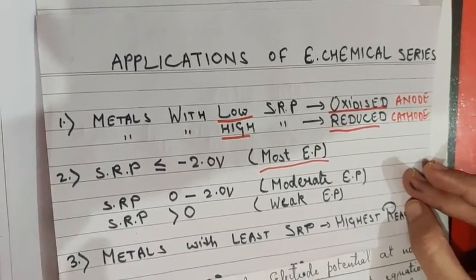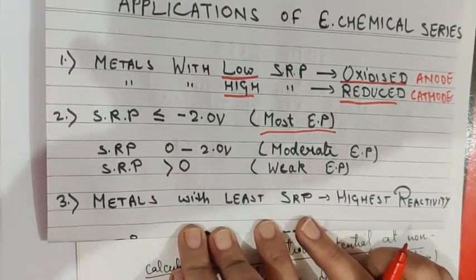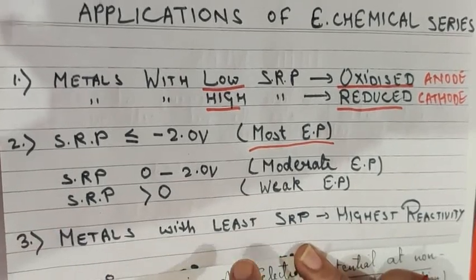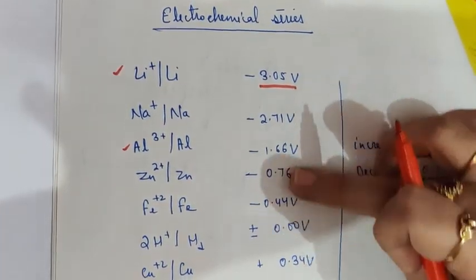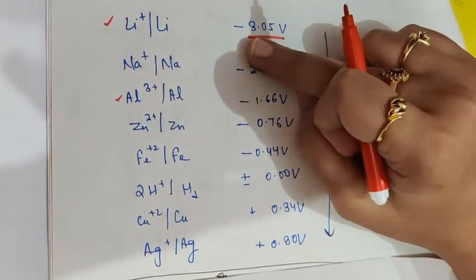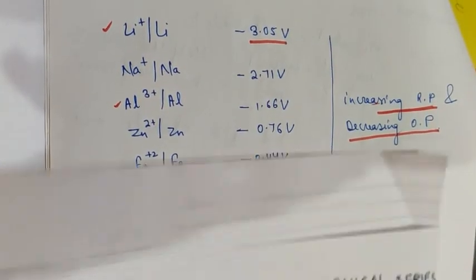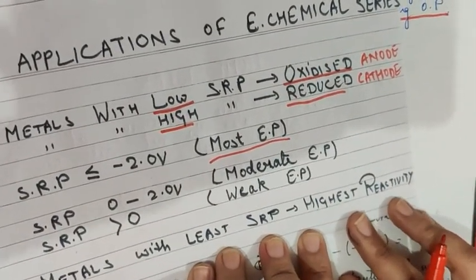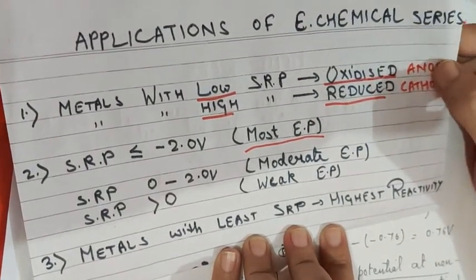Third point: metals with the least SRP have the highest reactivity. From the series, lithium has the least SRP — its negative value is the highest among all metals — so it has the highest reactivity in comparison to the other elements in the electrochemical series.